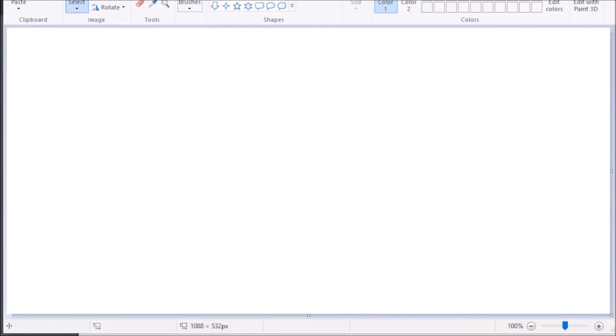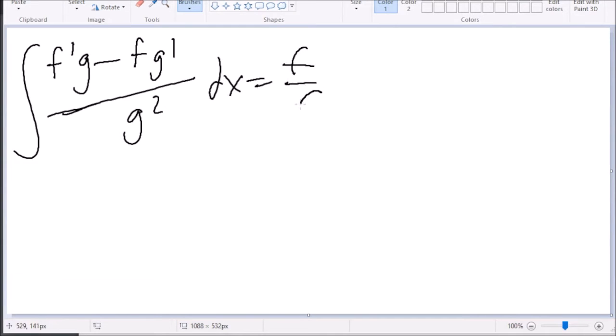So if we remember the quotient rule, it's f prime g minus f g prime over g squared. And of course, we're integrating this. So the integral of this is just going to be f over g, and we want to know what f is and we want to know what g is.